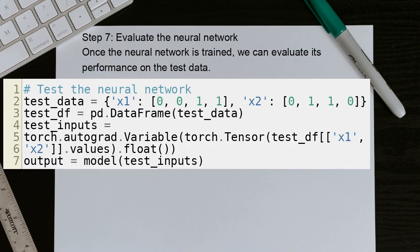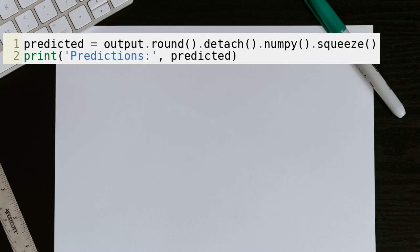Step 7: Evaluate the neural network. Once the neural network is trained, we can evaluate its performance on the test data. And here is the rest of the code. Let's continue.